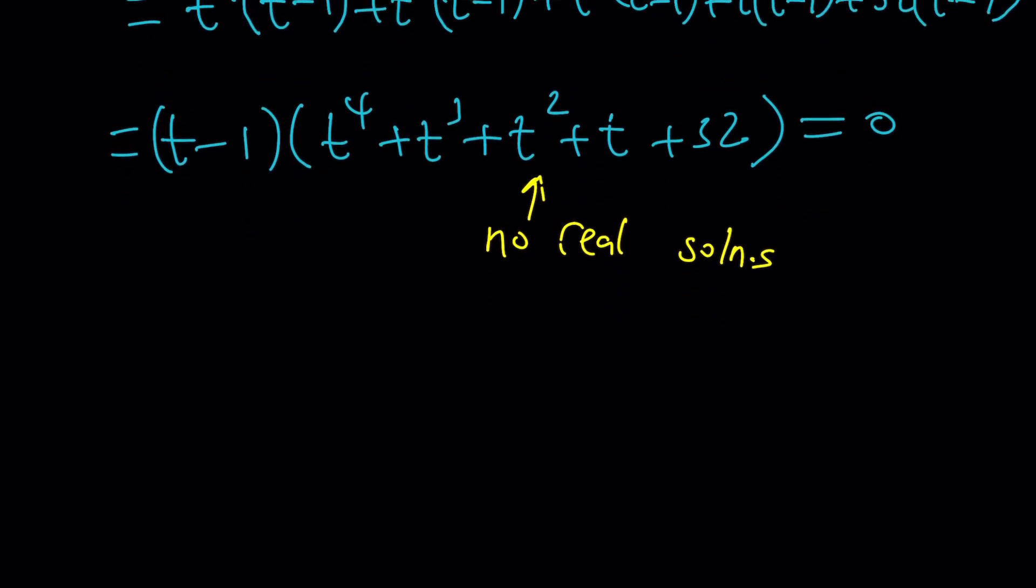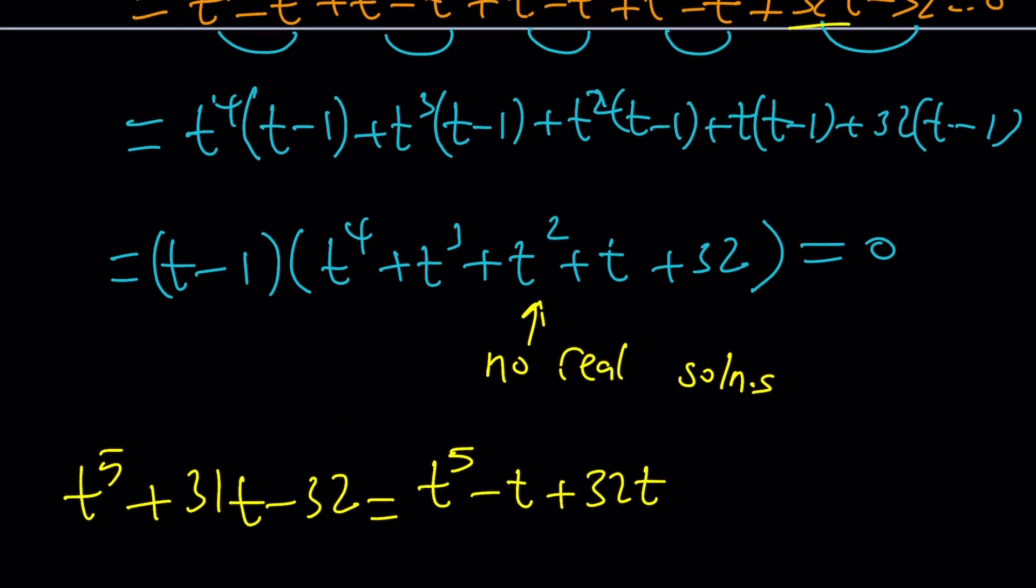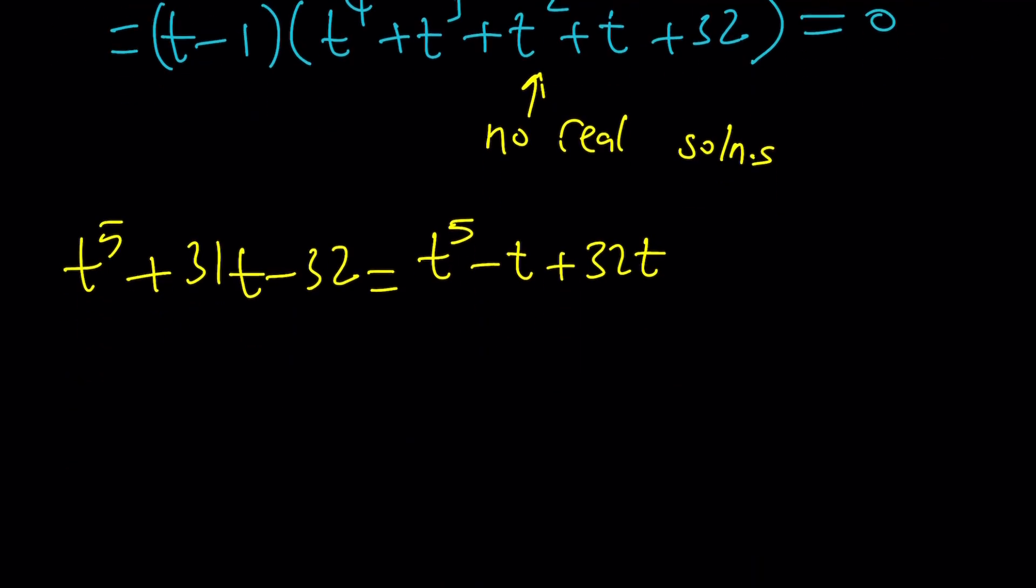So, I could break this down alternatively like this. I could just write it this way. T to the 5th. Notice that 31 is 1 less than 32. So, I could just break down at T, and that would mean adding 32T. Look at how much we save by doing this. And then, this is equal to 0. Now, we can go ahead and factor by grouping again.